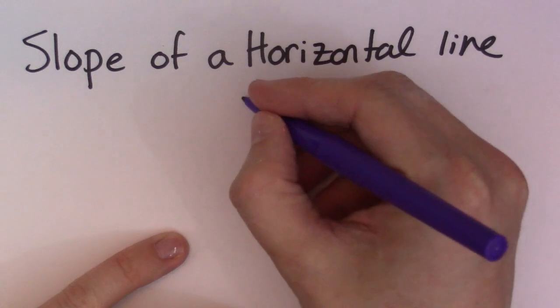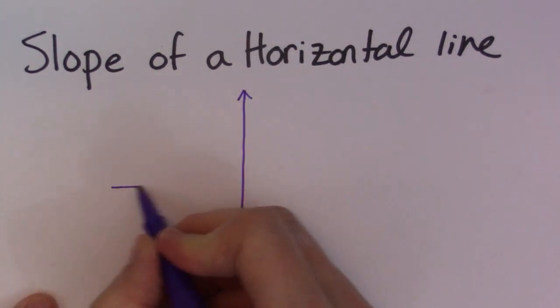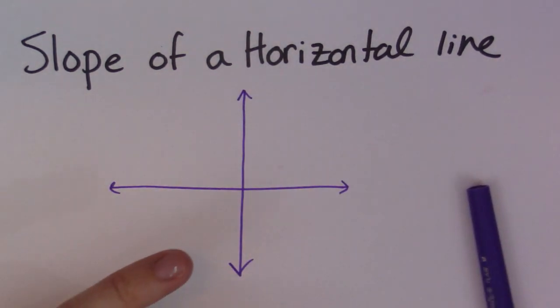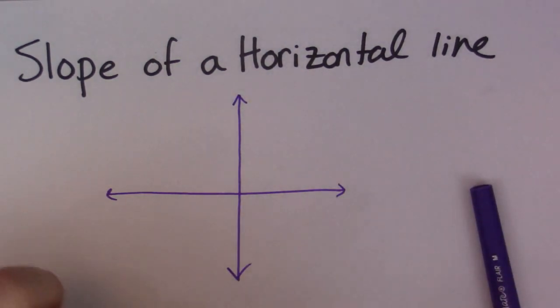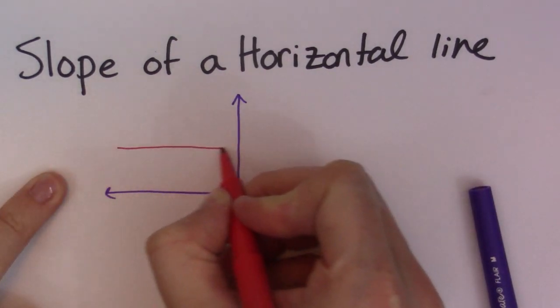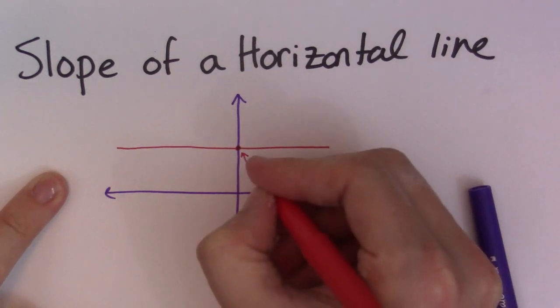So, first of all, horizontal line. Let me draw you one. So if we have an xy axis, like this guy, let me get a different color. And we have a horizontal line, so here it is. And let's say it goes through this number here, call it 5.